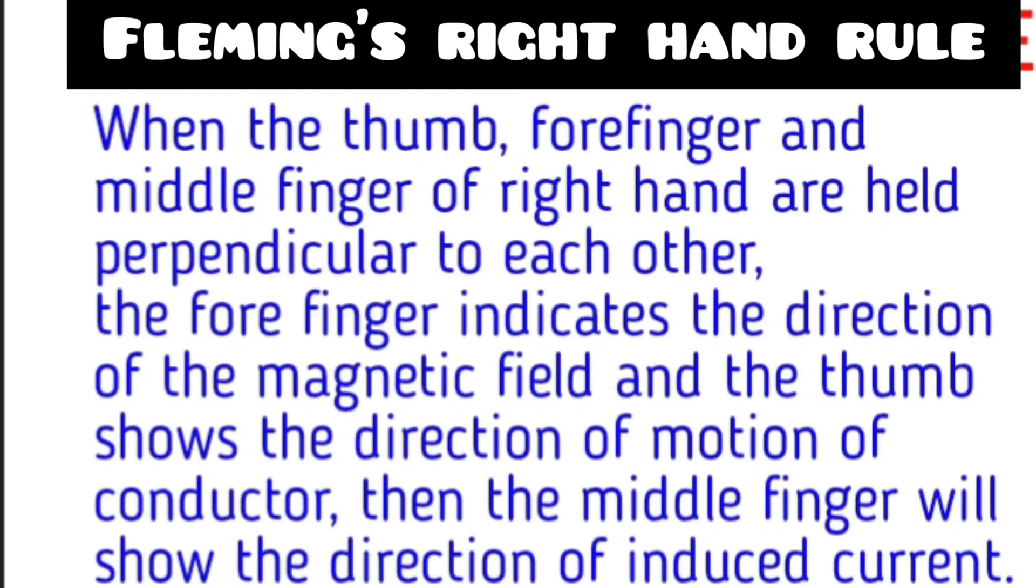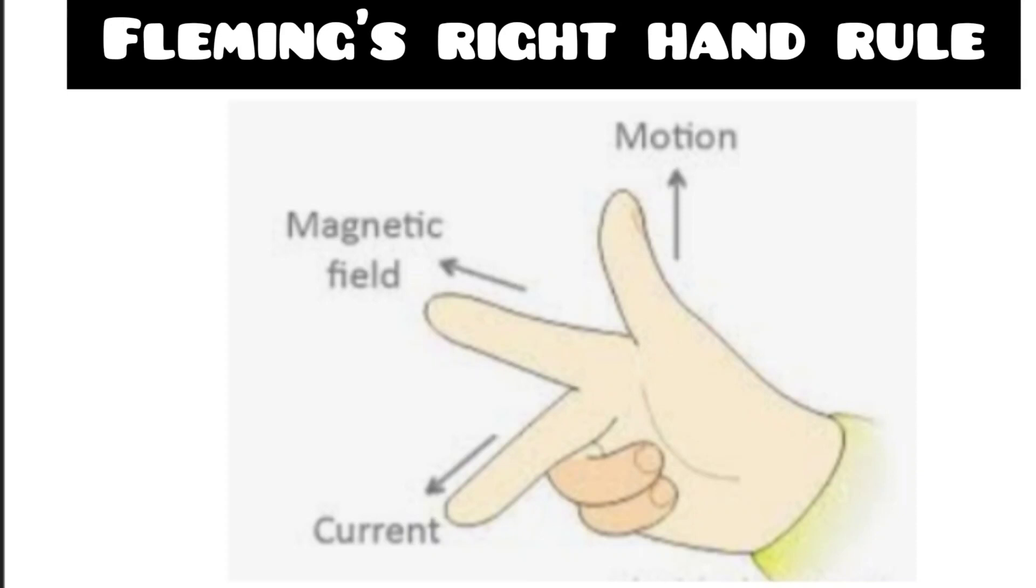So when you keep your fingers in perpendicular shape like this, your motion is shown by your thumb finger, your magnetic field is shown by your forefinger, and the induced current is shown by the middle finger. With this we come to an end of your chapter. The remaining topics are deleted. Hope you all enjoyed it. Children, study well for your exams. Bye.